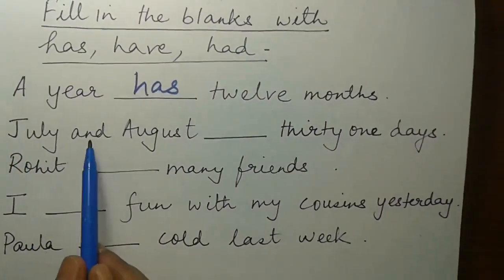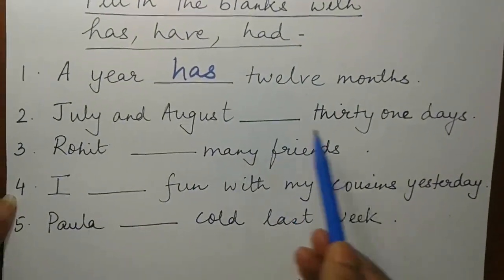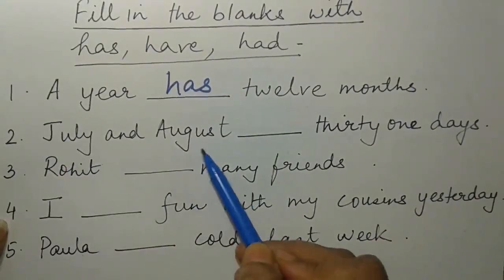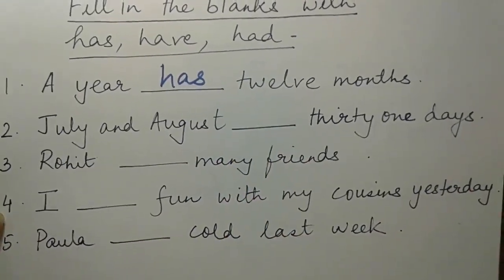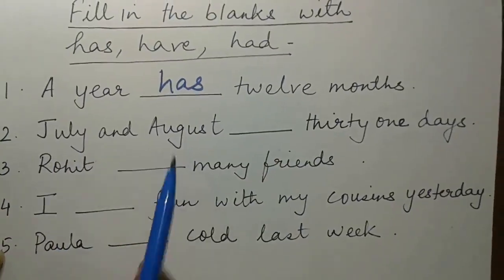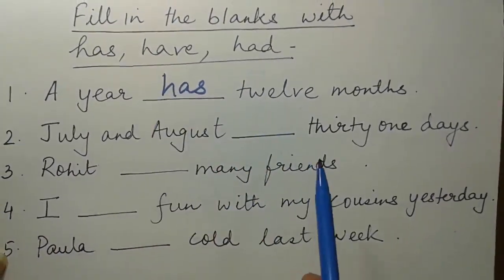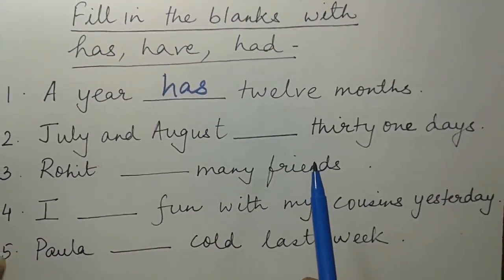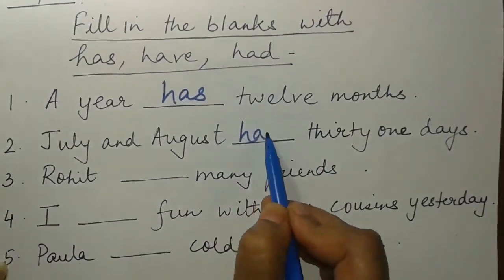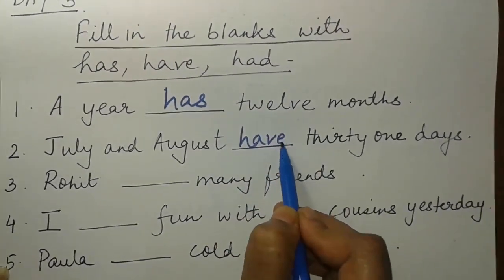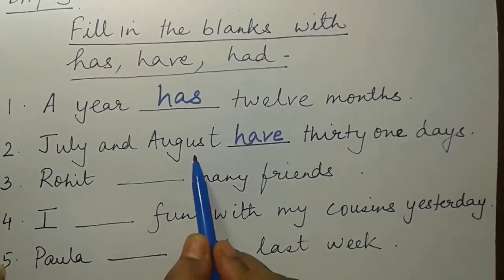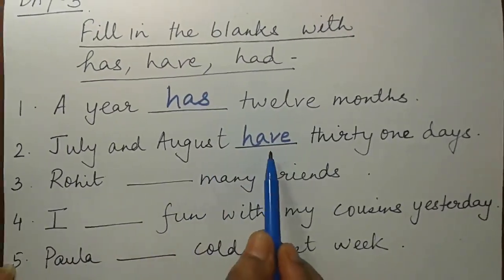July and August ___ 31 days. July and August — how many months? Two months. So what will it be, has or have? Have. Very good. Have, because more than one — July and August, more than one, so it is have.